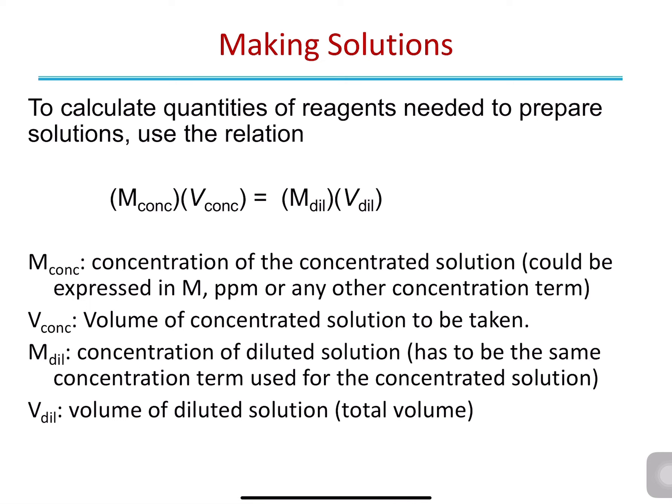To calculate the quantity of reagents needed to prepare a solution, we use the relation: M_concentrated times V_concentrated equals M_diluted times V_diluted. M_concentrated is the concentration of the concentrated solution, and we can use any term of concentration. As long as it's the same term on both sides of the equation, it's fine — if you use molarity on one side, you have to use molarity on the other side.